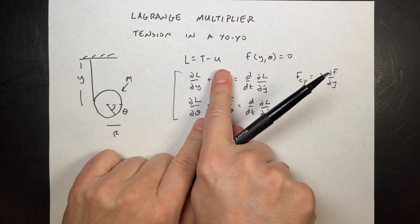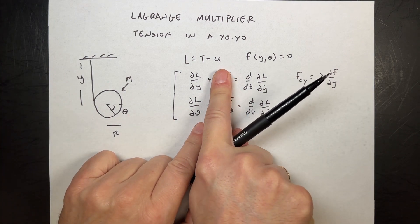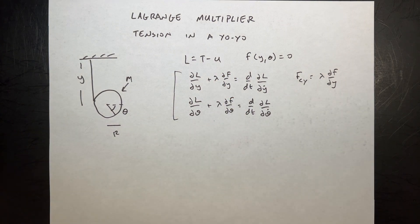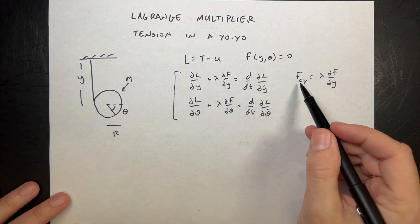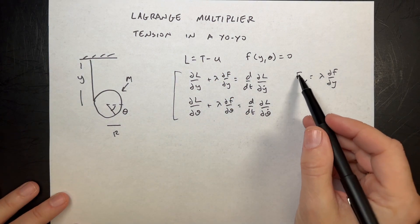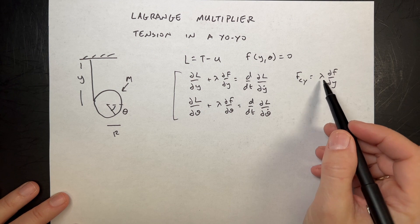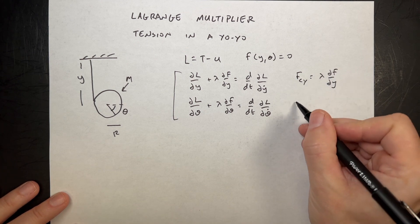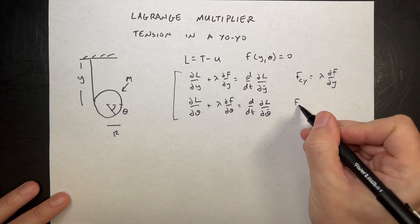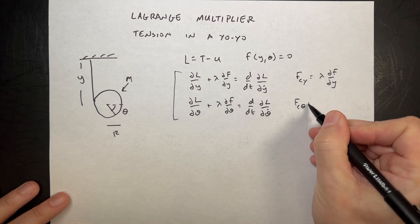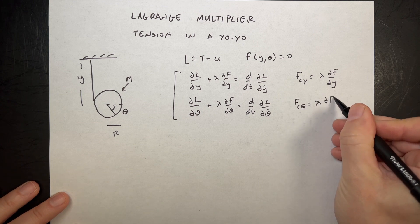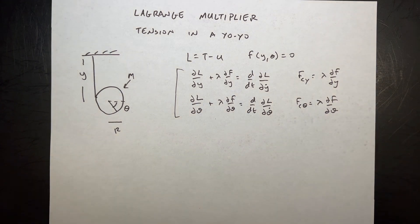If you take lambda out, you get your normal Euler-Lagrange equation. And then we have the same equation for theta. The force of constraint in the Y direction is lambda times the partial of F with respect to Y. For the theta direction, it would be lambda times the partial of F with respect to theta.